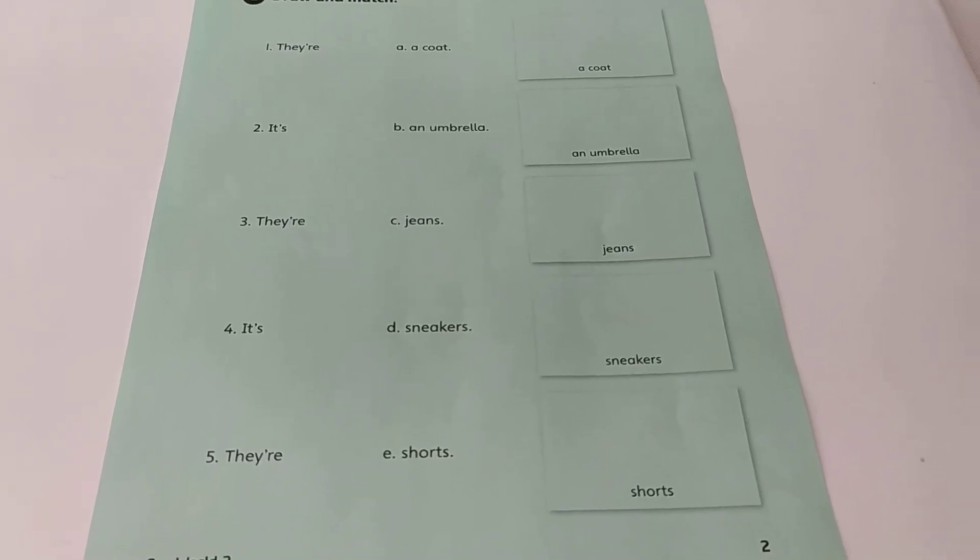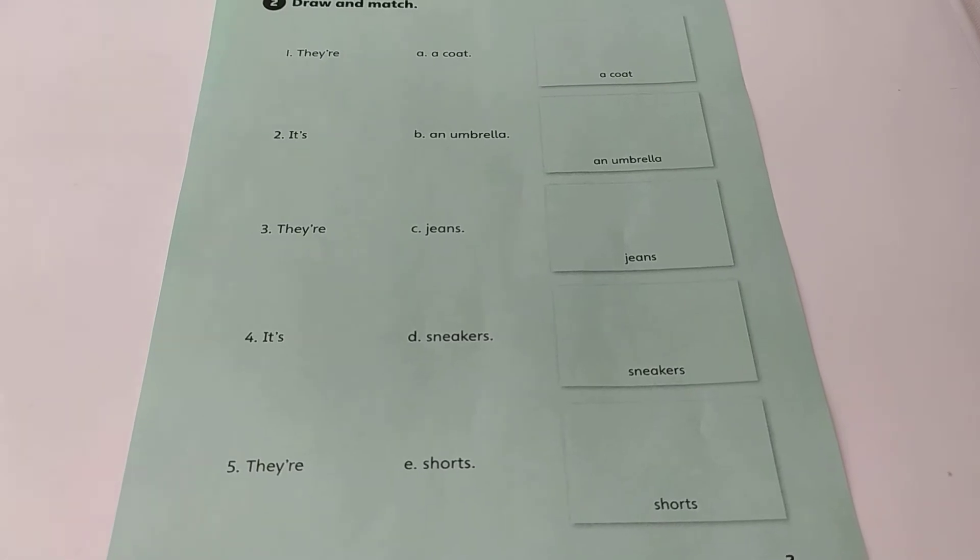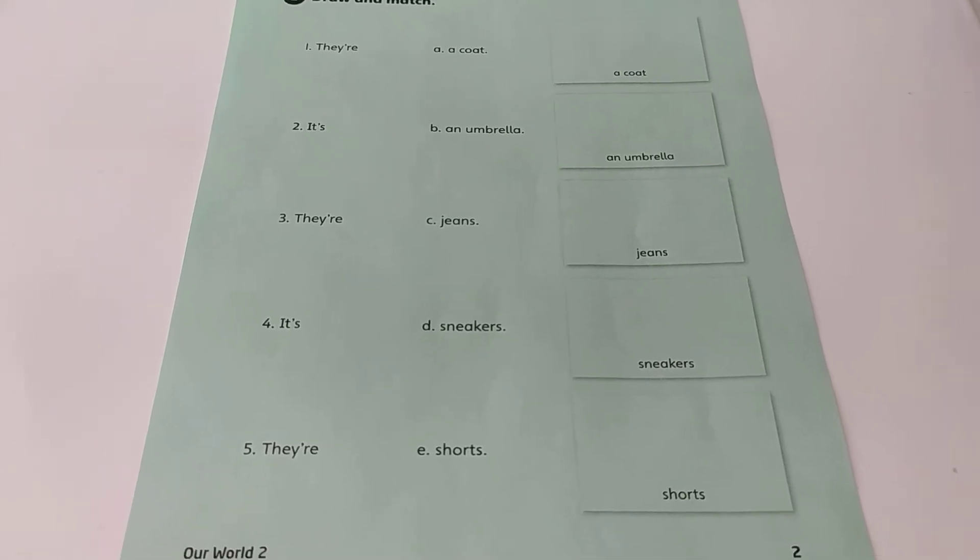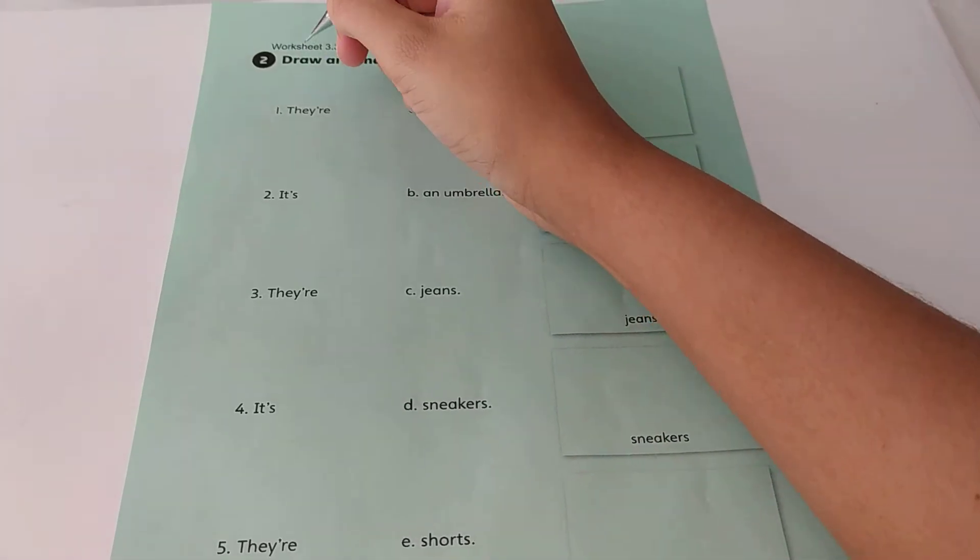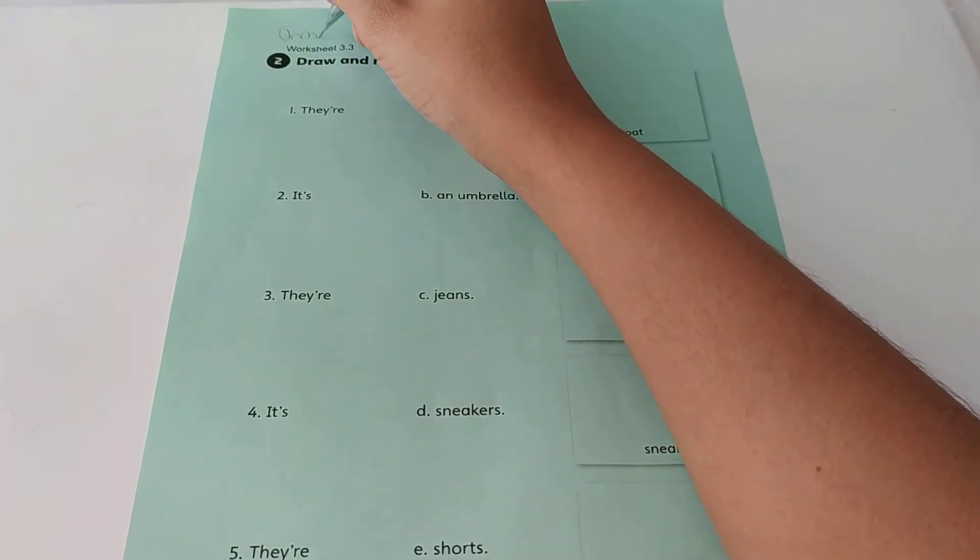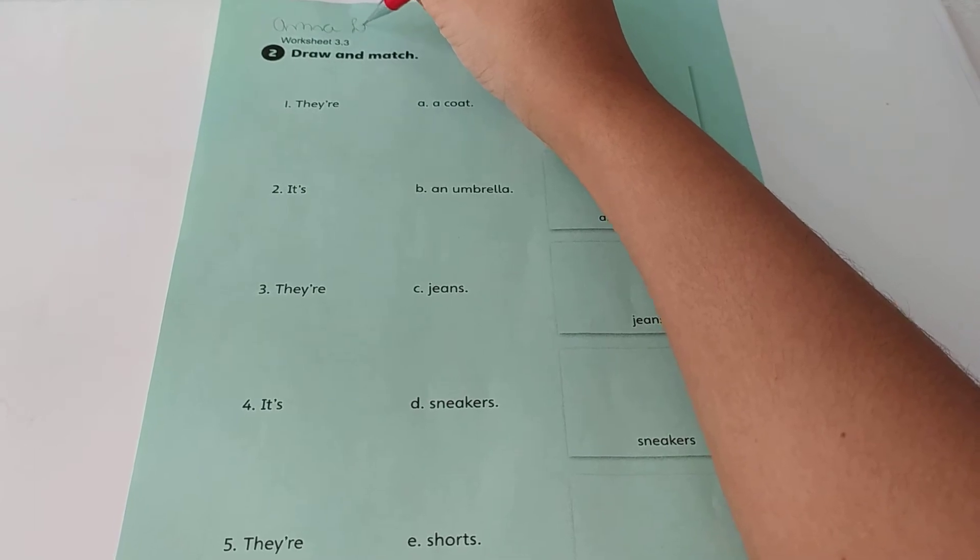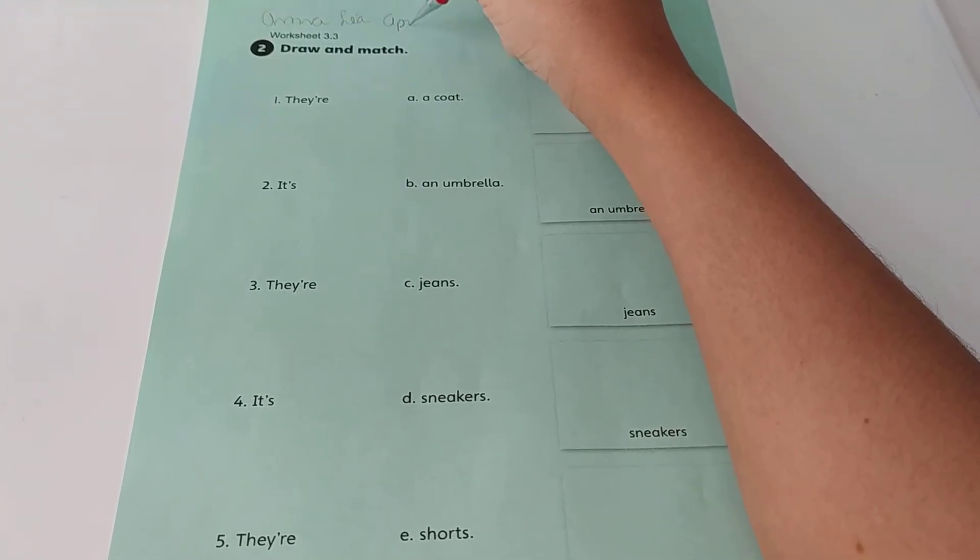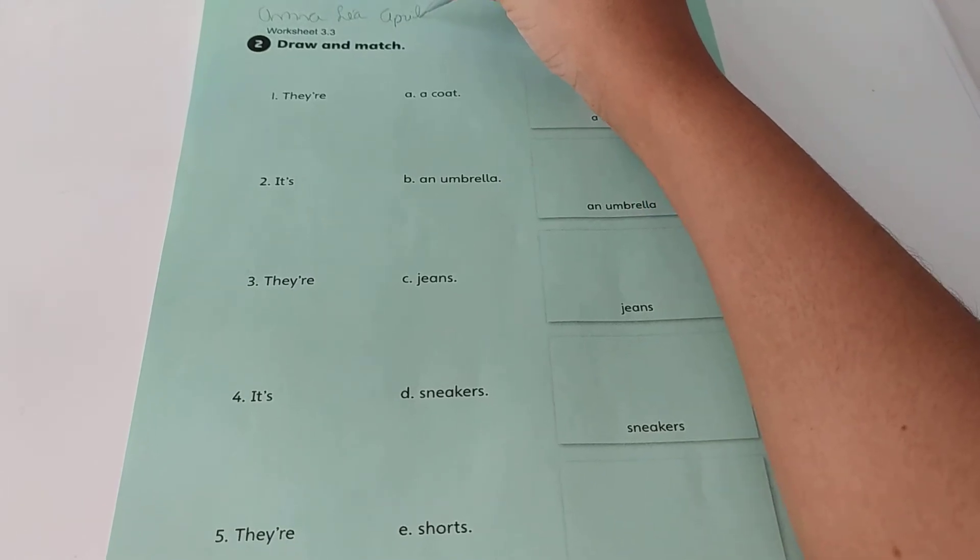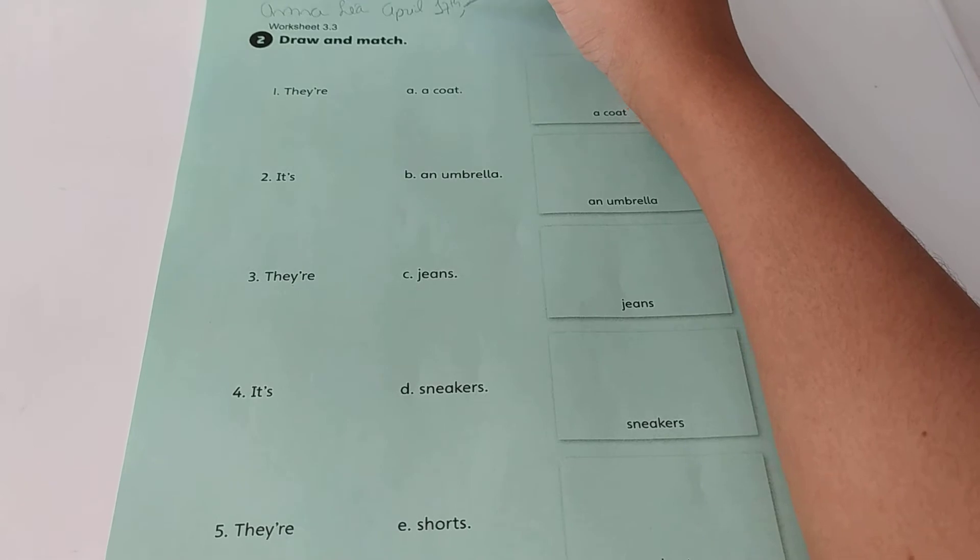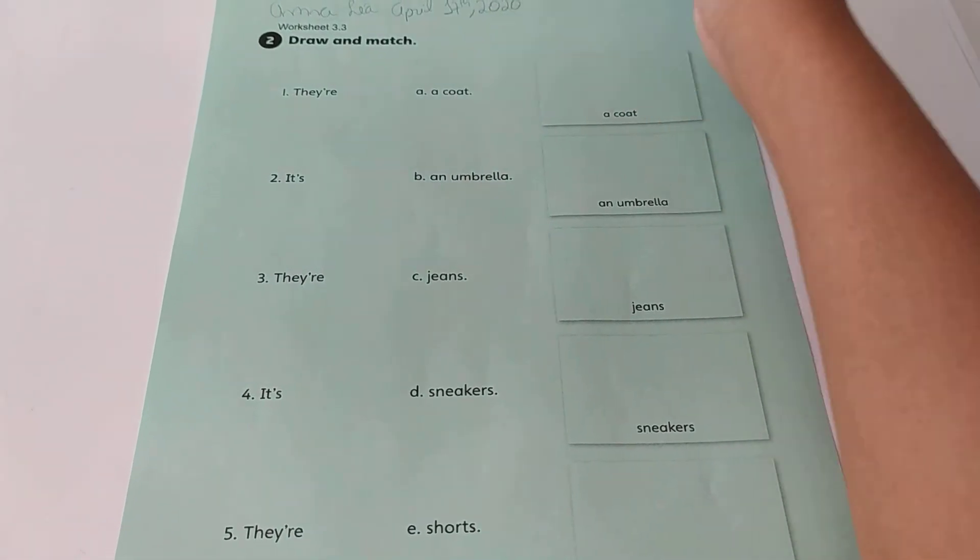And the first thing that we're gonna do is write our names. We're gonna write our name on the top of the page, like I'm gonna do now. Here, I'm gonna write my name. And I'm gonna write the date. Today's April 17th, 2020.